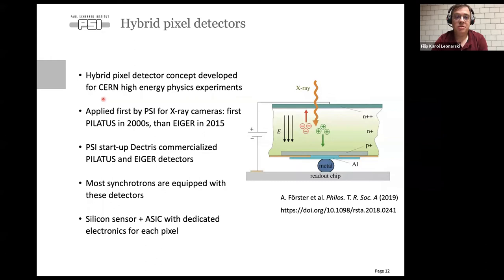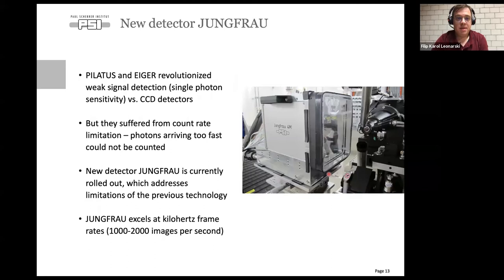PSI is also a major player in hybrid pixel detectors — we were developing them for CERN and then researchers at PSI realized the technology could be used for x-ray cameras, which became Pilatus and Eiger, named after Swiss mountains. There is now a PSI startup that commercialized the design and most synchrotrons are equipped with these detectors. There is a sensor — a piece of silicon where x-rays are absorbed — and a readout chip with dedicated electronics for each pixel, so a four-megapixel detector is like four million detectors working in parallel.